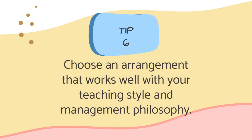Tip six: Choose an arrangement that works well with your teaching style and management philosophy. This is important because if you choose a seating arrangement that is the complete opposite of your style and philosophy, it will be hard for you to teach. For example, if you are noise-sensitive and want your students to be more focused and independent, then you shouldn't choose a pod arrangement — rows would be best for your style.